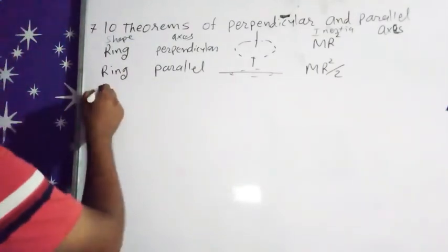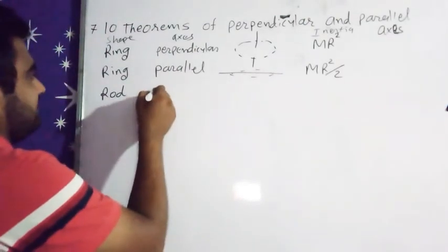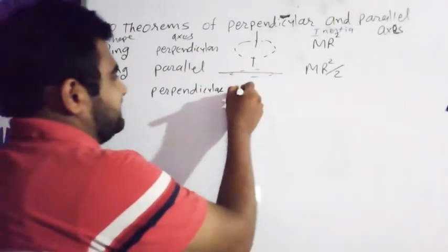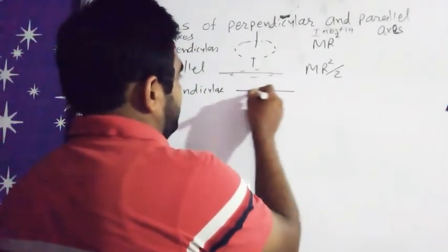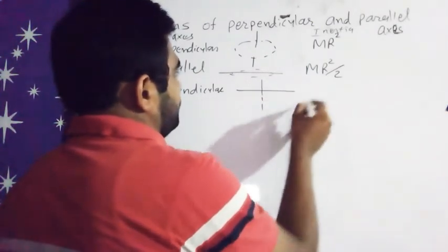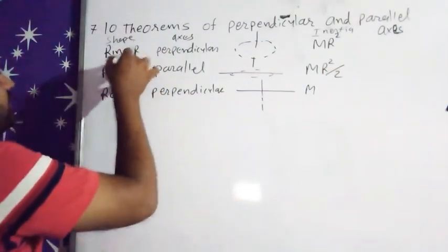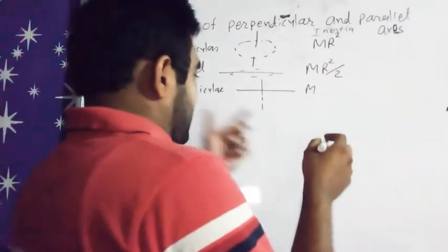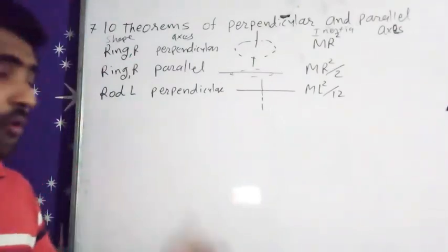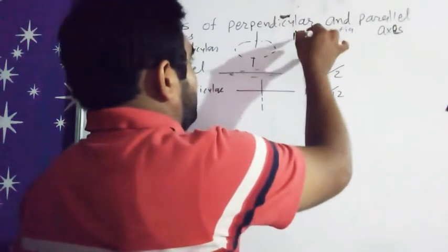Third is our rod which has length L, and axis is perpendicular. So just like this, this is one rod and the axis is perpendicular. Then rod has length L, here radius R. So ML square by 12. So this is moment of inertia, not only inertia, moment of inertia.